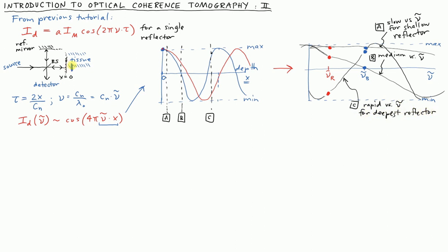You can see that in the math here, that if I make x bigger, then I don't need to change nu tilde by as much to increase the argument by a factor of 2π. That's why I have a more rapid oscillation, a shorter period in nu tilde if I have a larger value of x. And all of these measurements—notice, I never said I was moving the reference mirror. I was just considering different depths at which I could make my measurement in the tissue. So this is a situation where the reference mirror doesn't move.